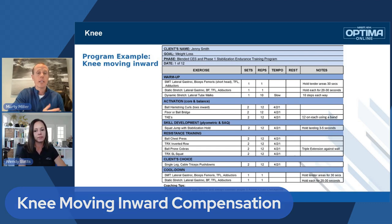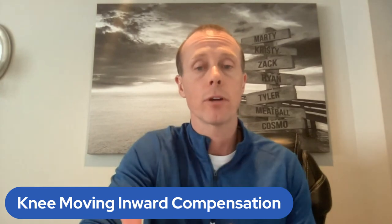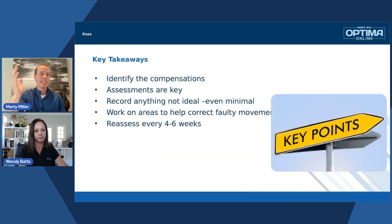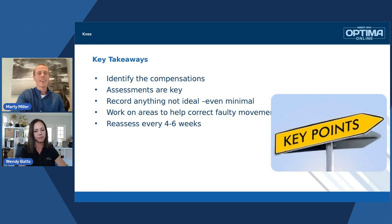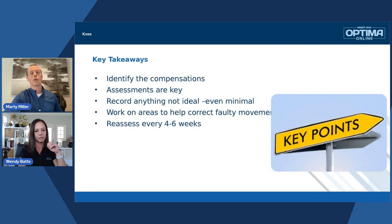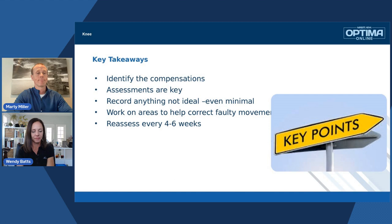For takeaways: identify the compensations, which means assessments are key. Record anything not ideal, even if it's minimal, because it could potentially get worse. Work on areas to help correct faulty movement patterns — it's either right or it's wrong, we're either moving better or worse. Assess formally every four to six weeks, but remember every exercise, every set, every rep is a movement assessment. We're not trying to overwhelm you — we want to provide examples, give you feedback on why we chose these exercises, and show you that you don't want to just emphasize one compensation but still work the full body.